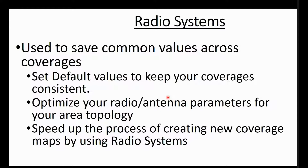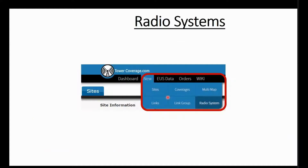Next we're going to go to radio systems. The radio system is used to take common values across multiple coverages. If you're a Ubiquiti shop or a Cambium shop, you can put in a common radio system. For example, if you use four 90-degree sectors, you can specify which antennas you use, your transmit power, your typical receive gain, and your typical average height above terrain for your receiving system. That way you can maintain a consistent radio system across all of your coverages and create coverages very quickly.